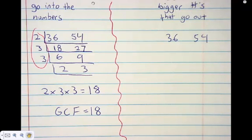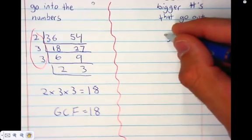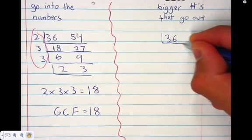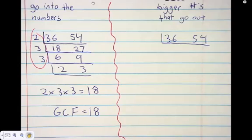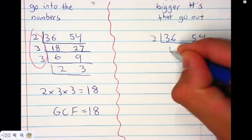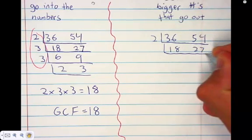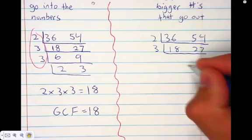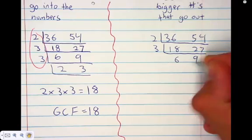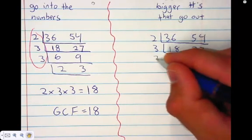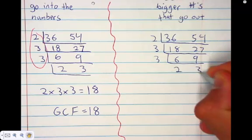Any questions on that? On the other side we're going to do it the same exact way - the only difference is how we finish. We go 2, and it would be 18 and 27. Then 3 goes in and we get 6 and 9. Three goes into that and we're left with 2 and 3.